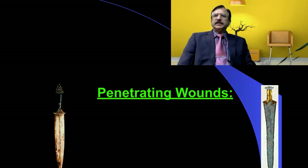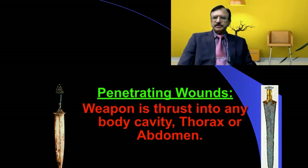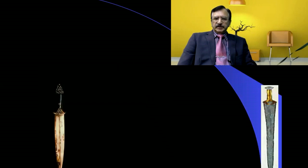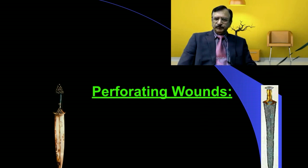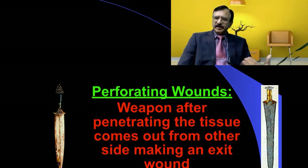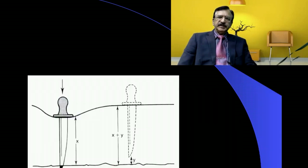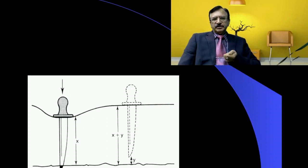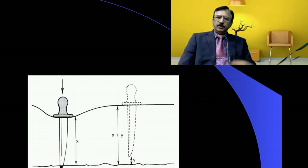These wounds can be either penetrating wounds, when the weapon is thrusted into the body cavity — that is the abdomen or thorax — or perforating wounds, where the weapon after penetrating through the tissues comes out from the other side as an exit wound. This is diagrammatically shown: the weapon is thrusted in, the tissues are being compressed, and the tip exits out from the opposite side.